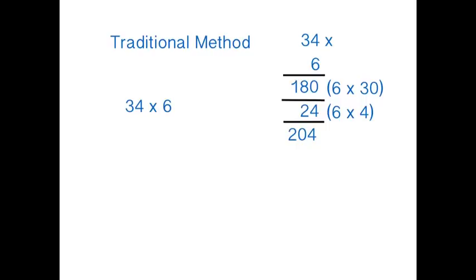where we'd first of all calculate 6 lots of 30, being 180, then 6 lots of 4, making 24. Those two numbers would then be added together to give us an answer of 204.